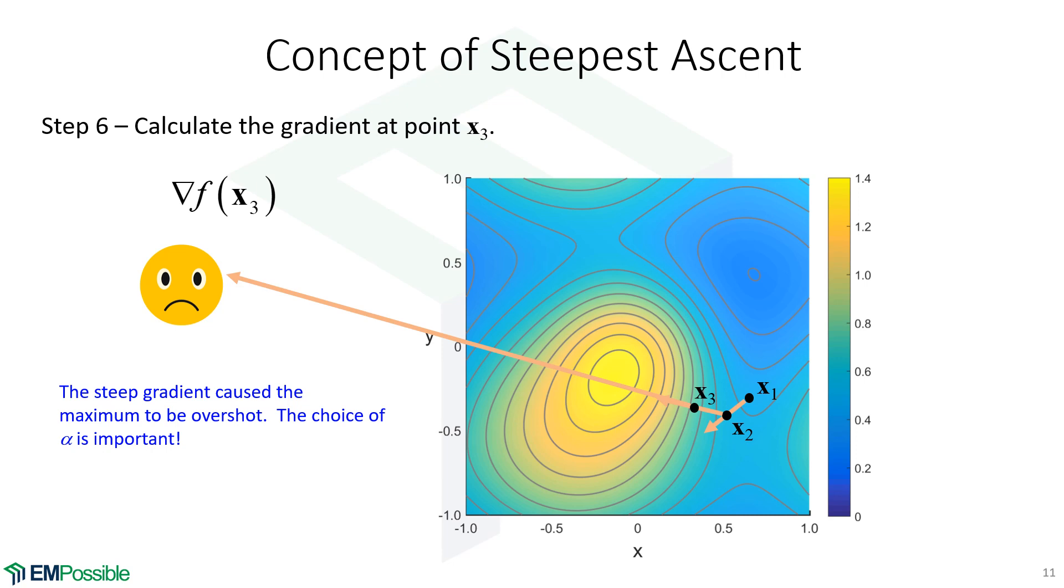Now, at this point, if we calculated the gradient, the gradient's huge because the function's changing really rapidly. And in fact, we have way overshot where the extrema is. This is a bummer. And so the choice of that alpha parameter is very important.